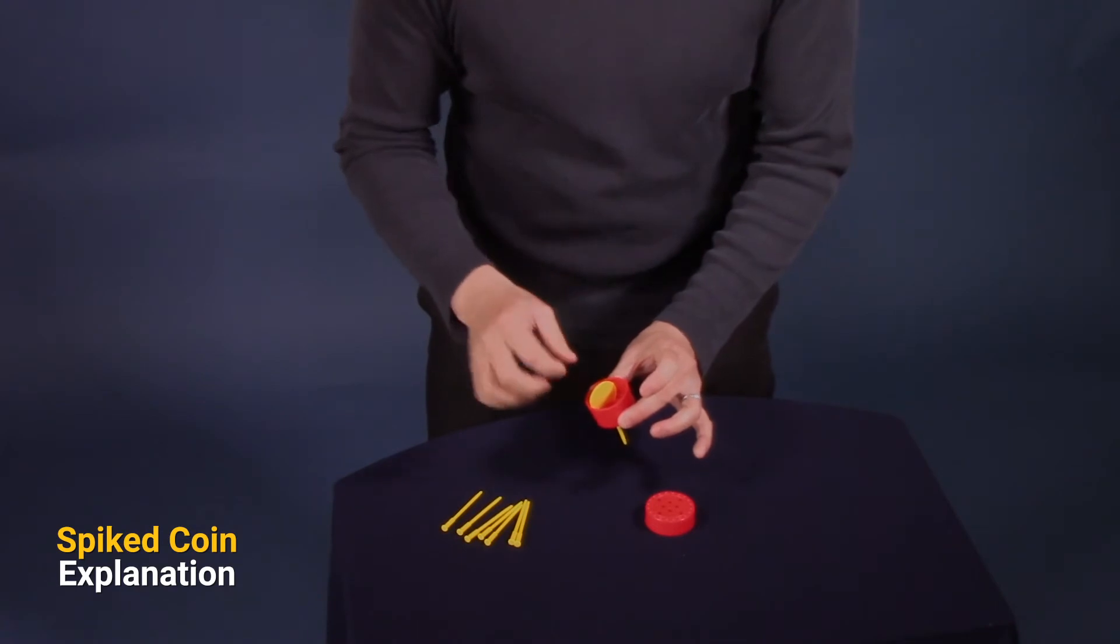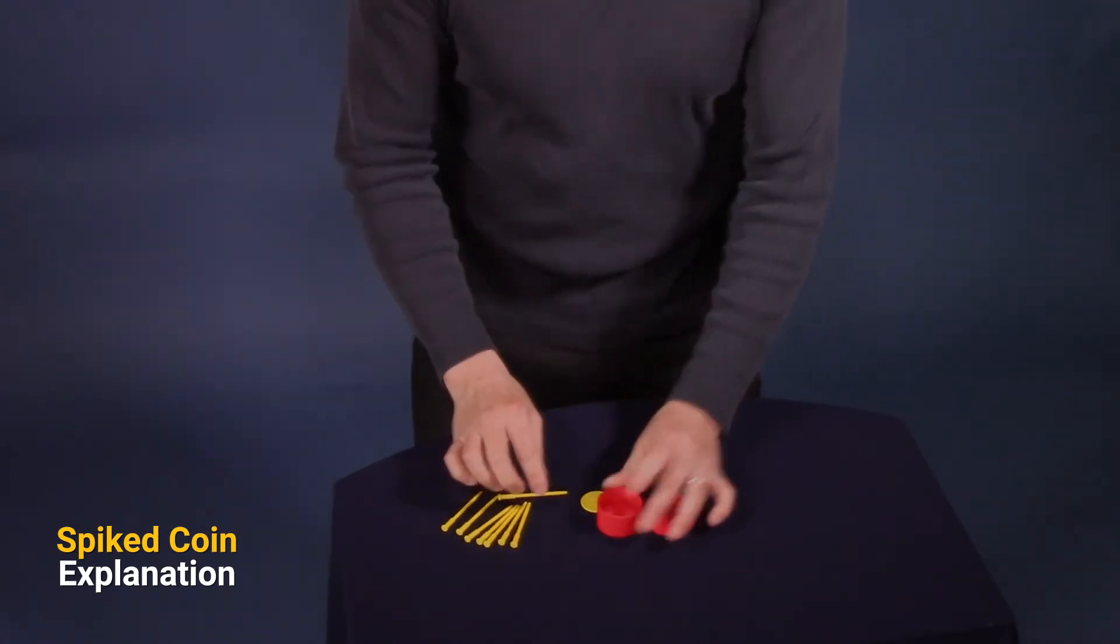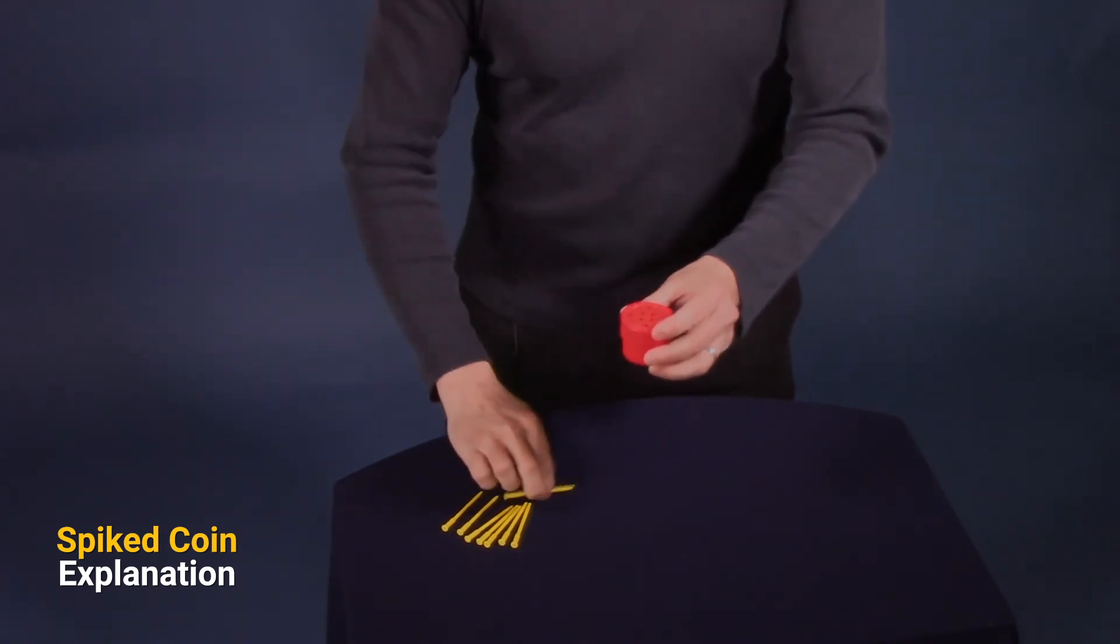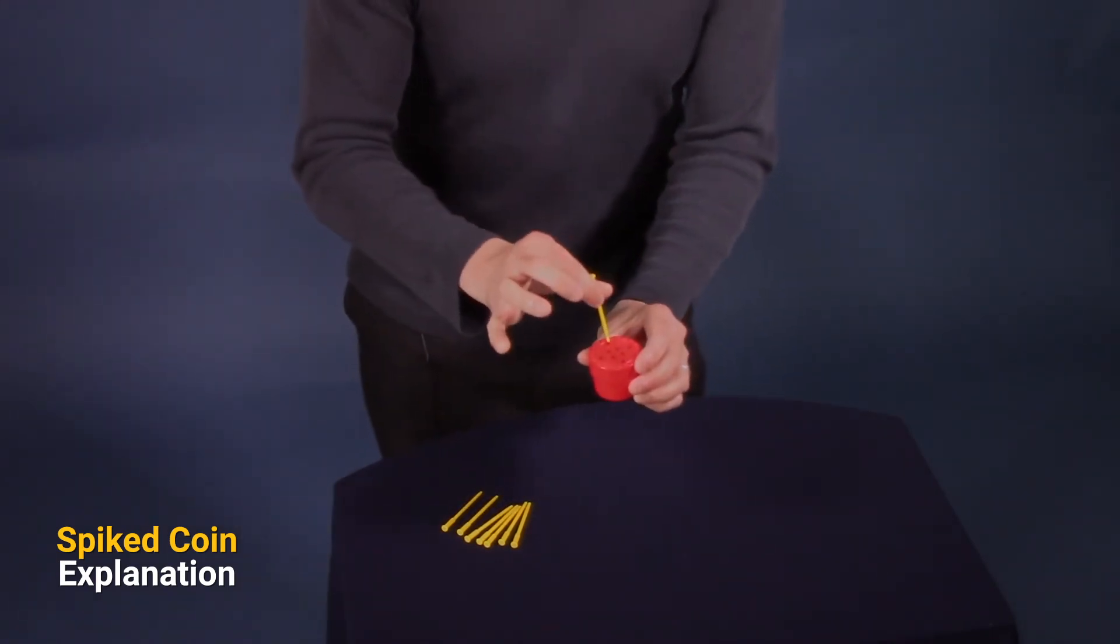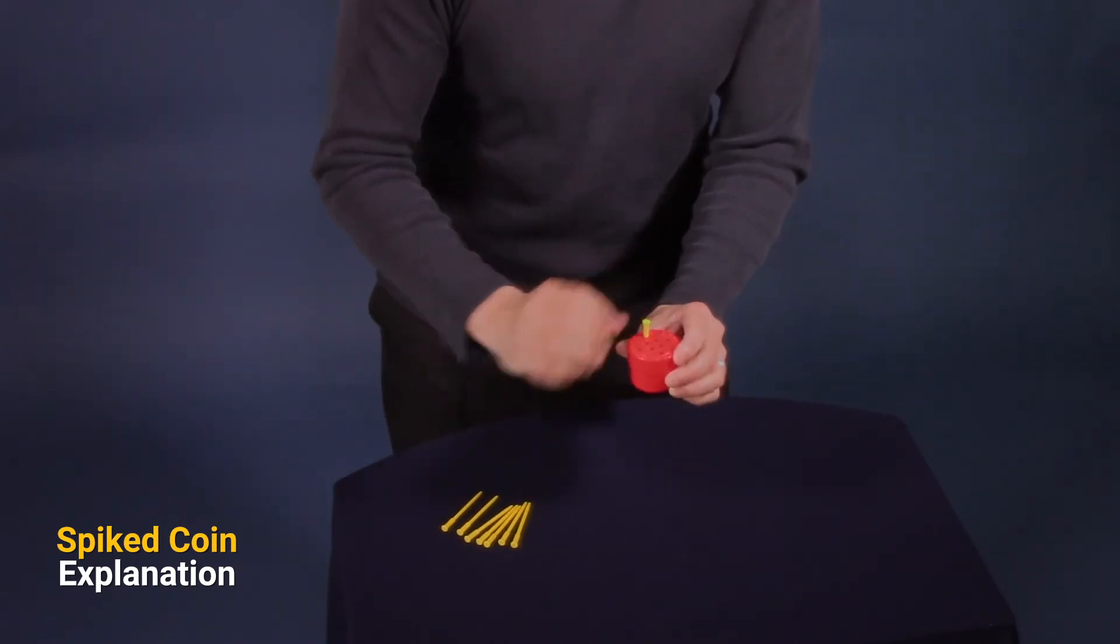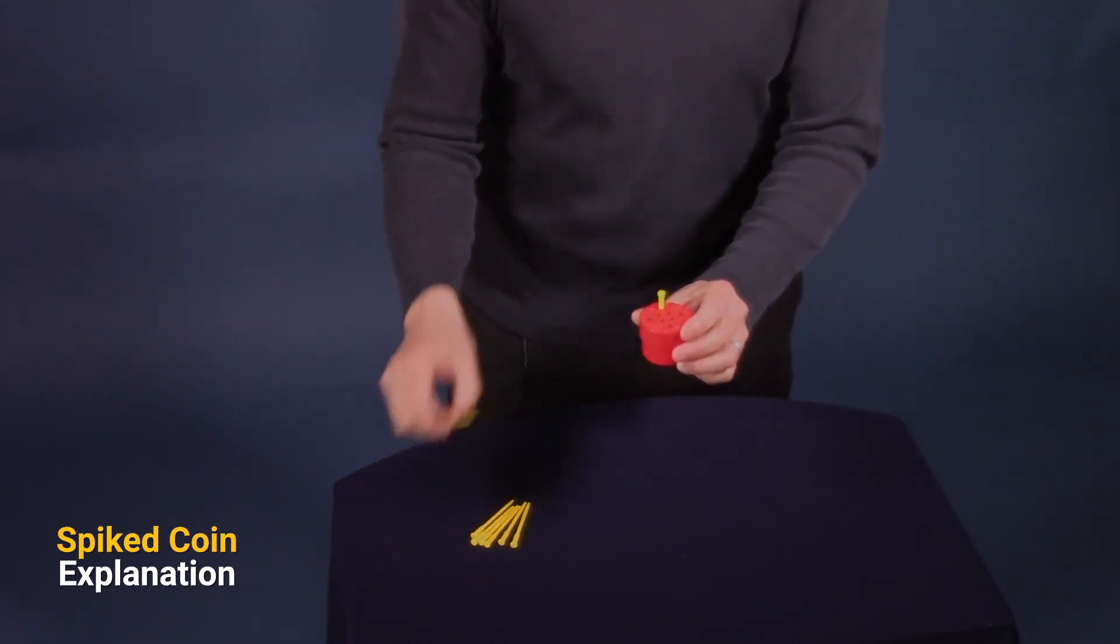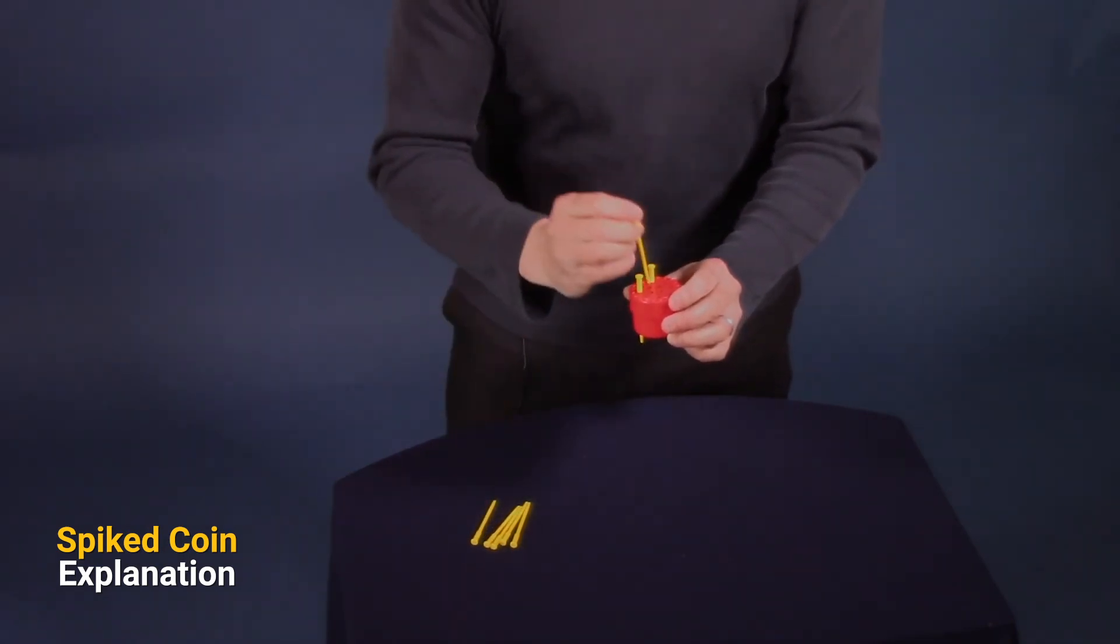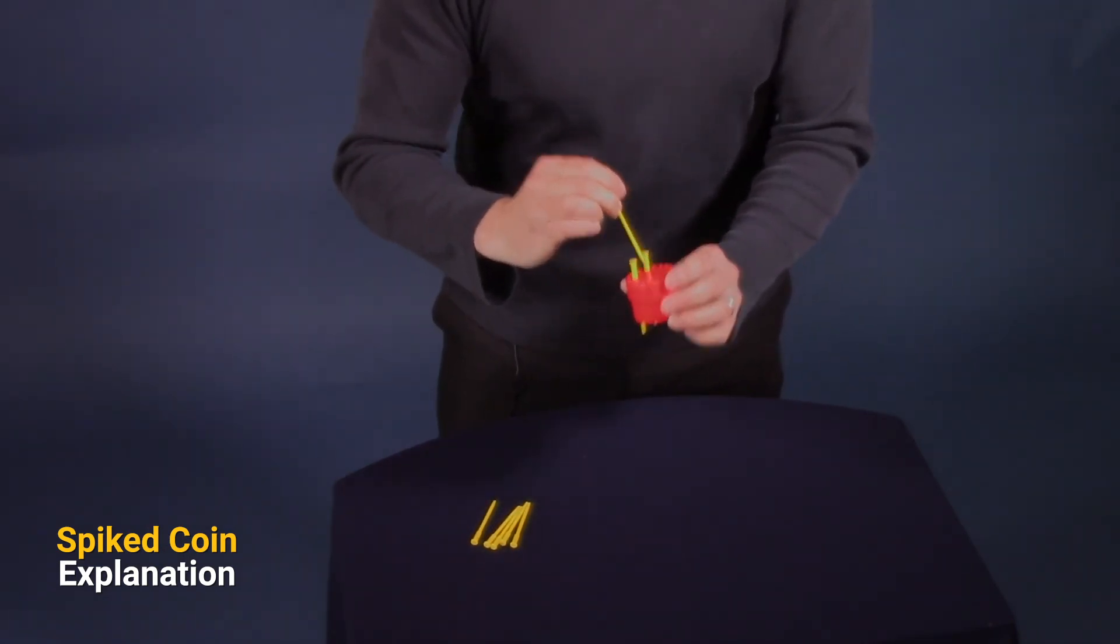So when you put all the rest of the spikes in, the coin is now to the side. So let's see what happens. Again, start with the outside hole and pretend like you're pushing it hard. You can wrap a story around while you're pushing the spikes through because that will fill the time when you're putting all of the spikes in.